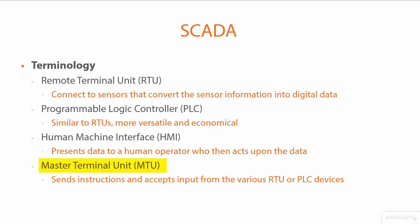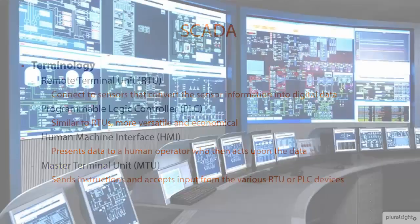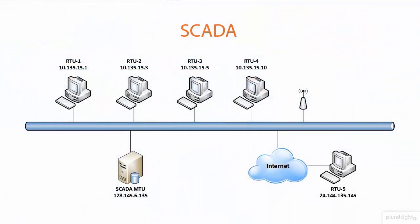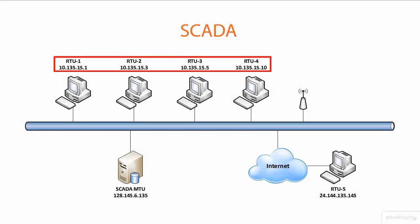The Master Terminal Unit, or MTU, sends information and instructions to the RTU or PLC and also receives information back, aggregating all of it. An example of what a SCADA environment might look like: you have a master control area or control center with screens from different systems — whether it's a nuclear power plant, water treatment facility, electrical grid, or sewage system. The PLCs and RTUs are spread throughout the entire system, all reporting back to the MTU, with an operator managing and monitoring everything.